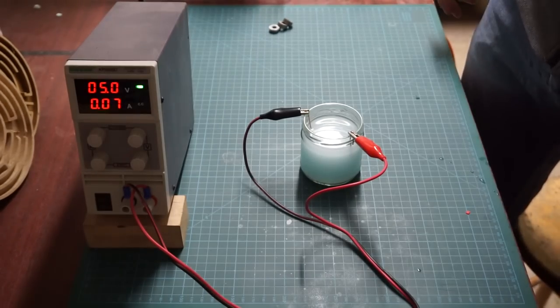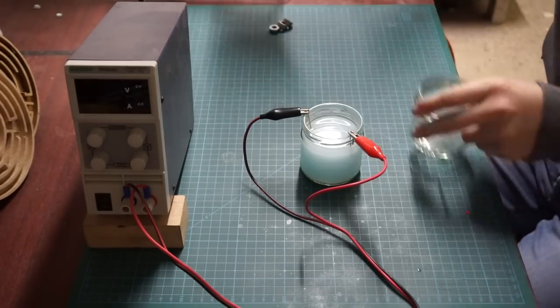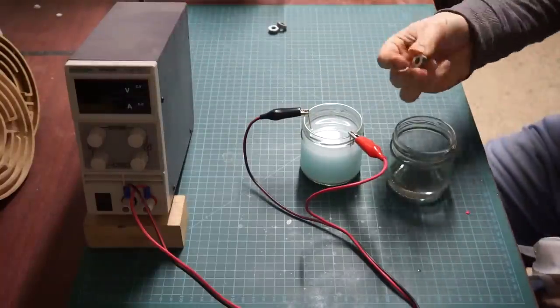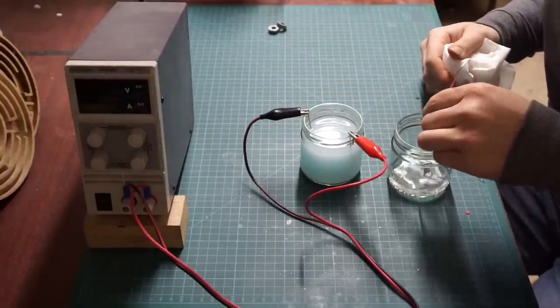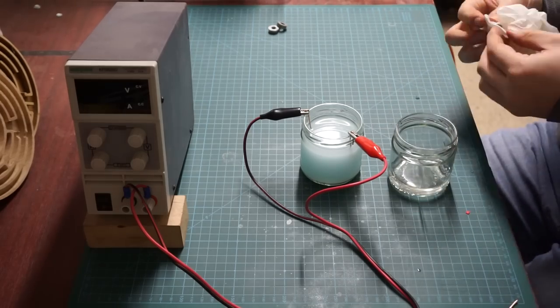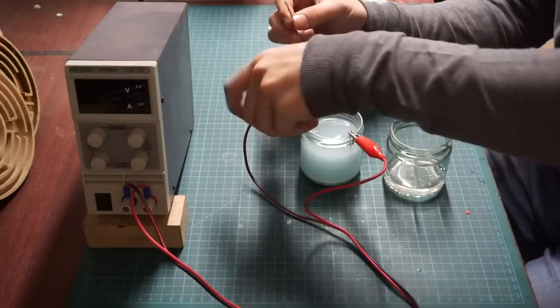After 30 minutes I removed the copper cathode and replaced it with our test piece. Since cleanliness is critical if you do any kind of electroplating I cleaned all of the remaining oil and fingerprints off of the rings using acetone.